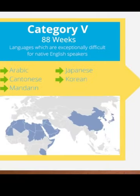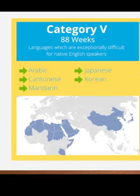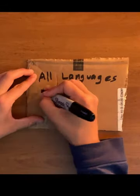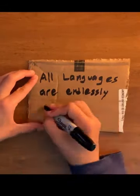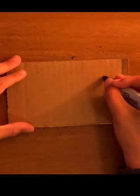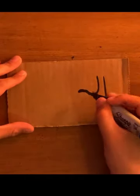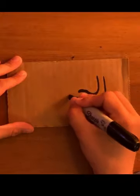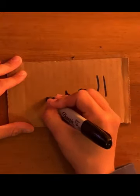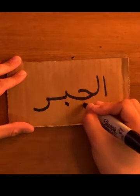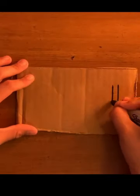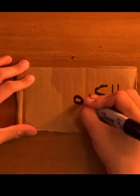You might have heard that Arabic is one of the hardest, most complex languages in the world, but let's keep in mind — all languages are endlessly complex. There are many English words that you might not have known are loan words from Arabic. For instance, English has borrowed words from Arabic related to mathematics — algebra, from al-jabr — and chemistry, from kimia.